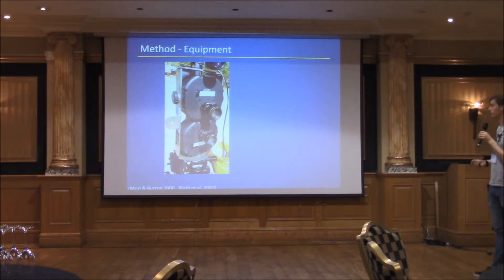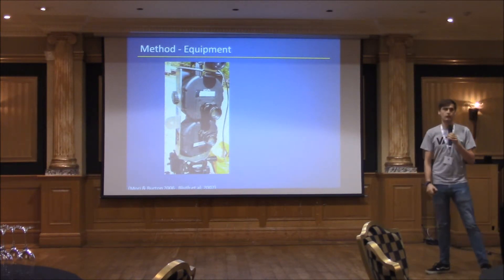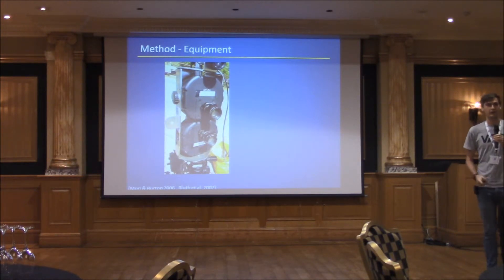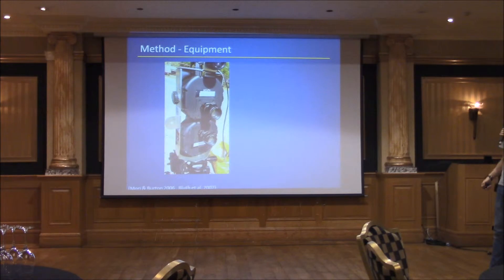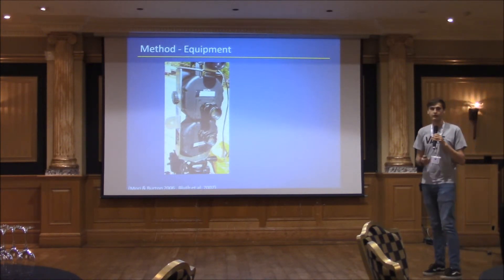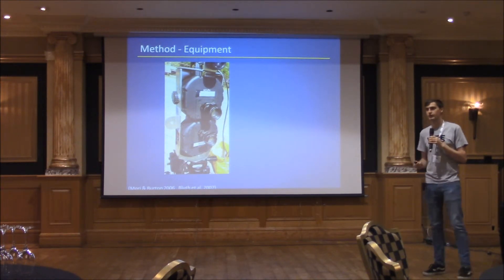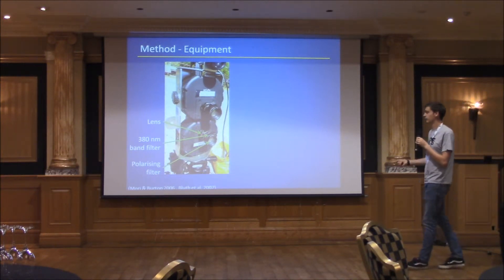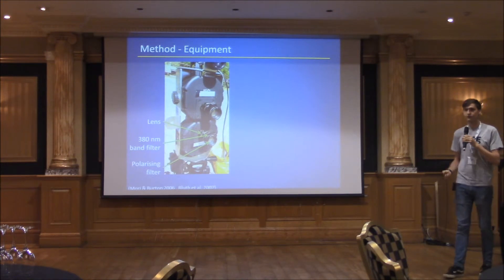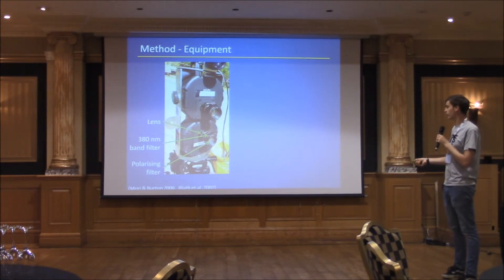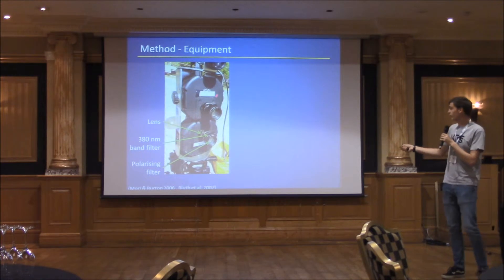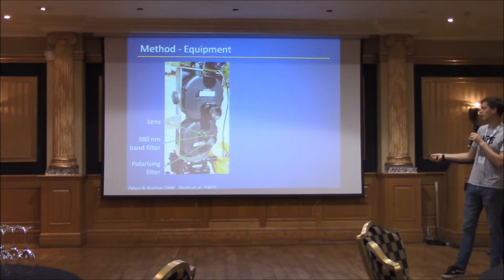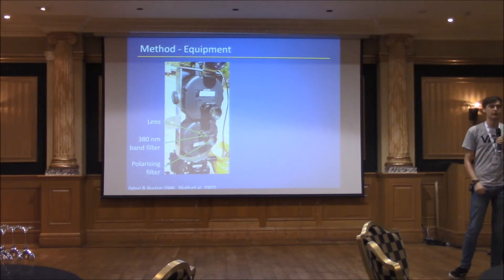We wanted to make the instrument as light as possible. We have two UV cameras, which are already widely used in volcano monitoring to measure the flux of sulphur dioxide — all we do is change the filters on them, making this method very cheap, which is good for volcano observatories. On each camera we have a lens, a 380 nanometre band filter to select the wavelength we want, and a polarizing filter on the front: one camera has a vertical polarizing filter, the other a horizontal one — so we measure two orthogonally polarized channels simultaneously at the same wavelength.